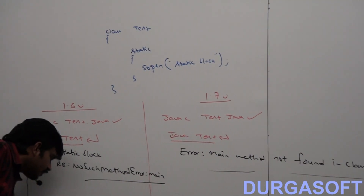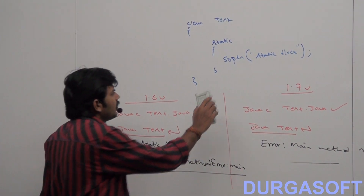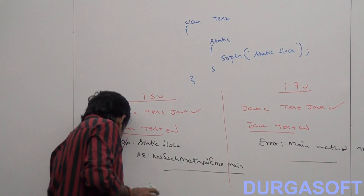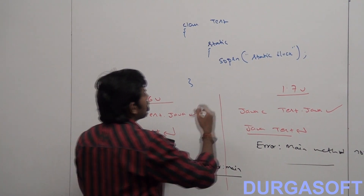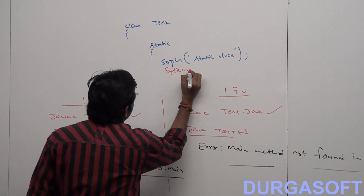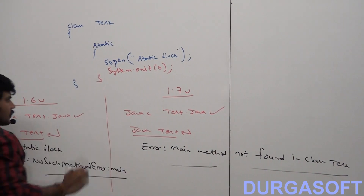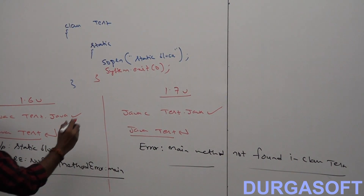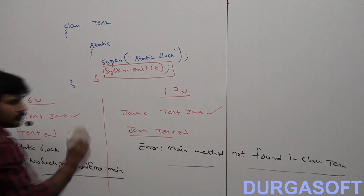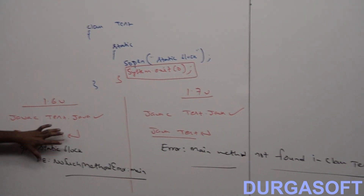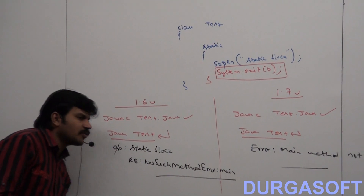Now let me make another small example based on the same concept. I am adding one extra line within the static block: System.exit(0). Can you tell — in the 1.6 version versus the 1.7 version — what changes?